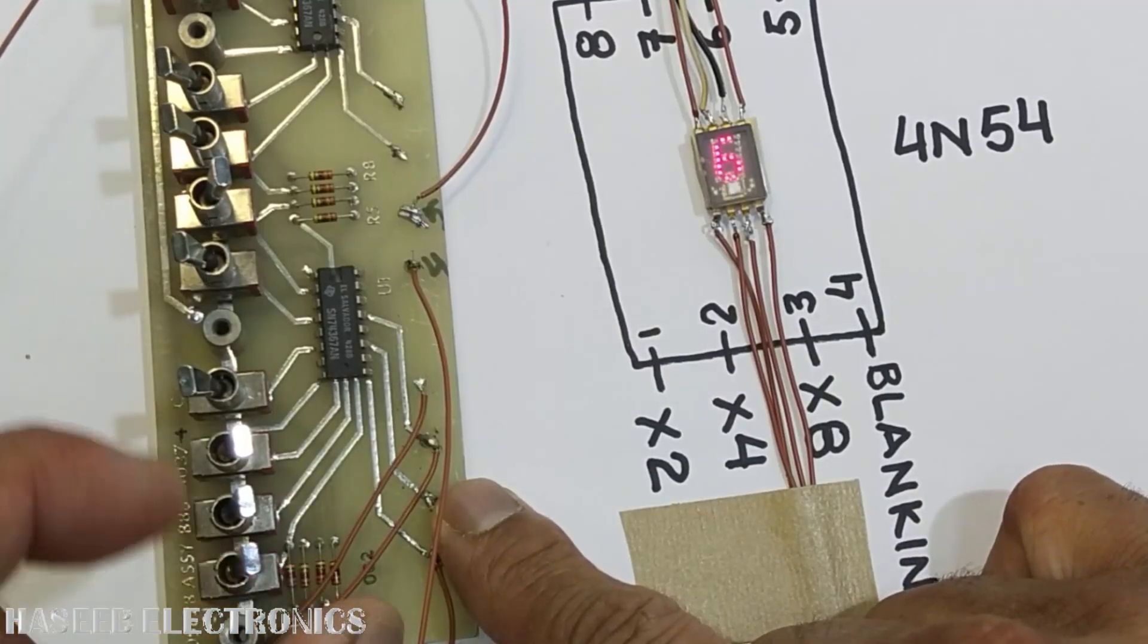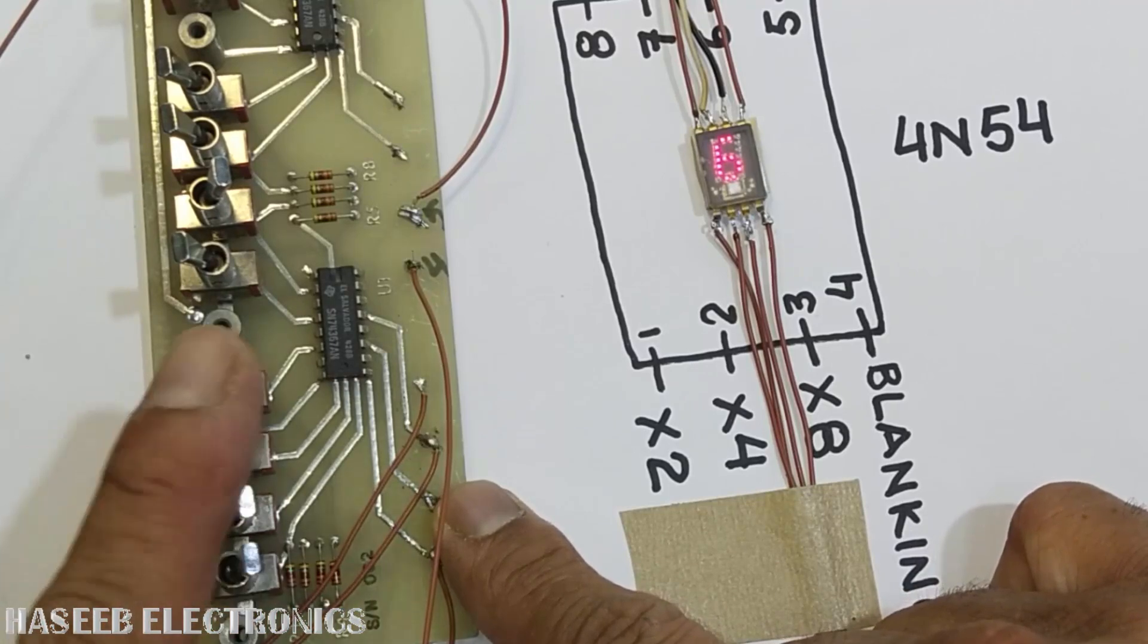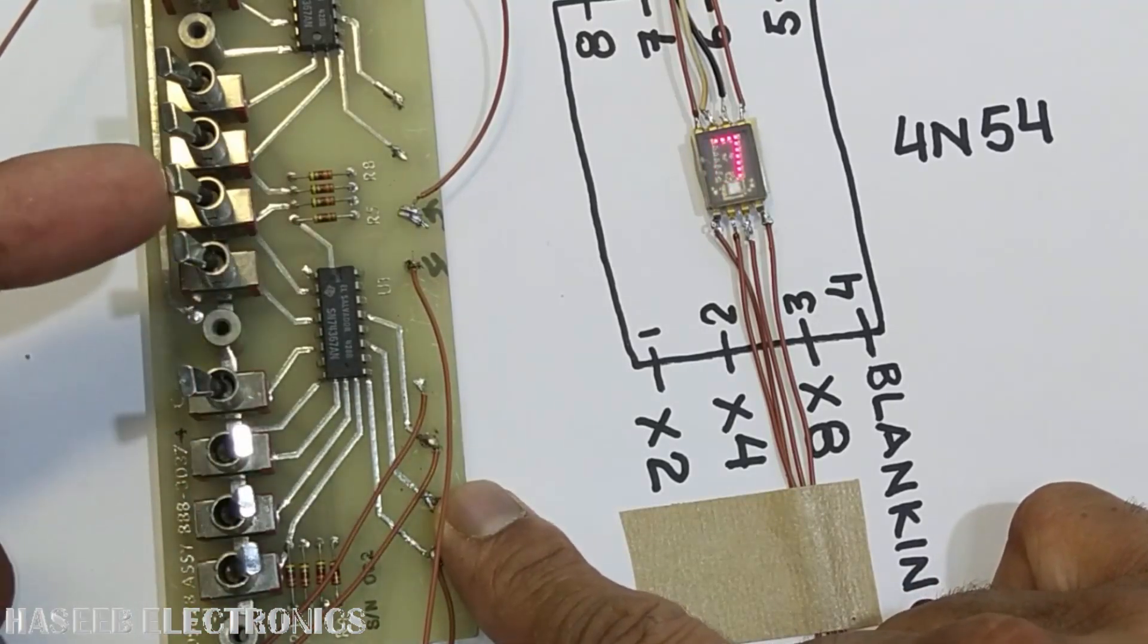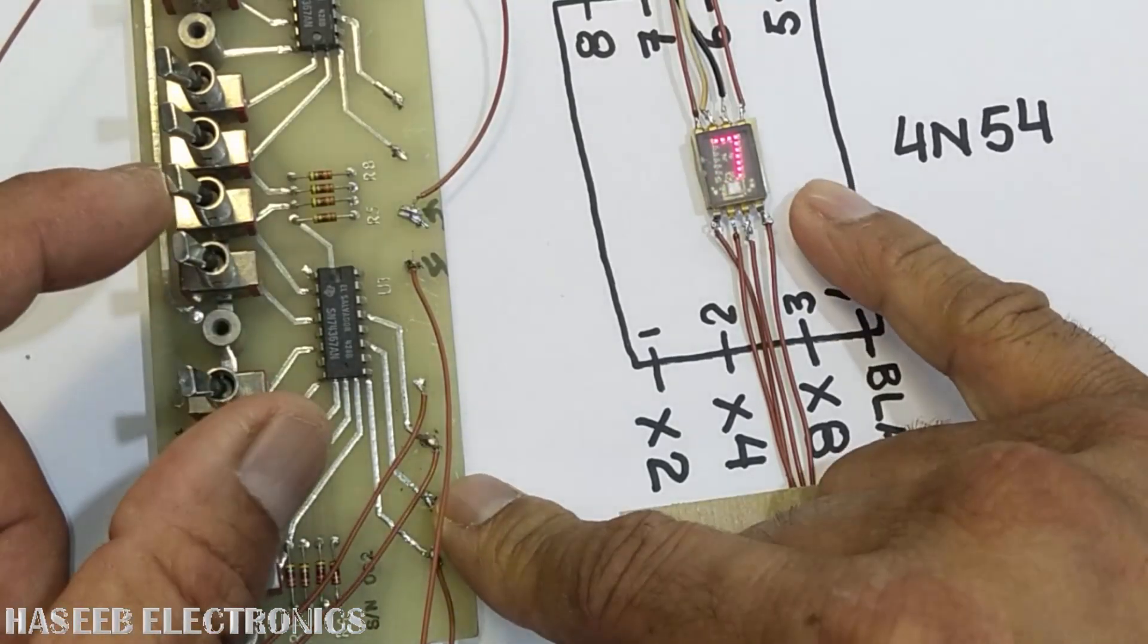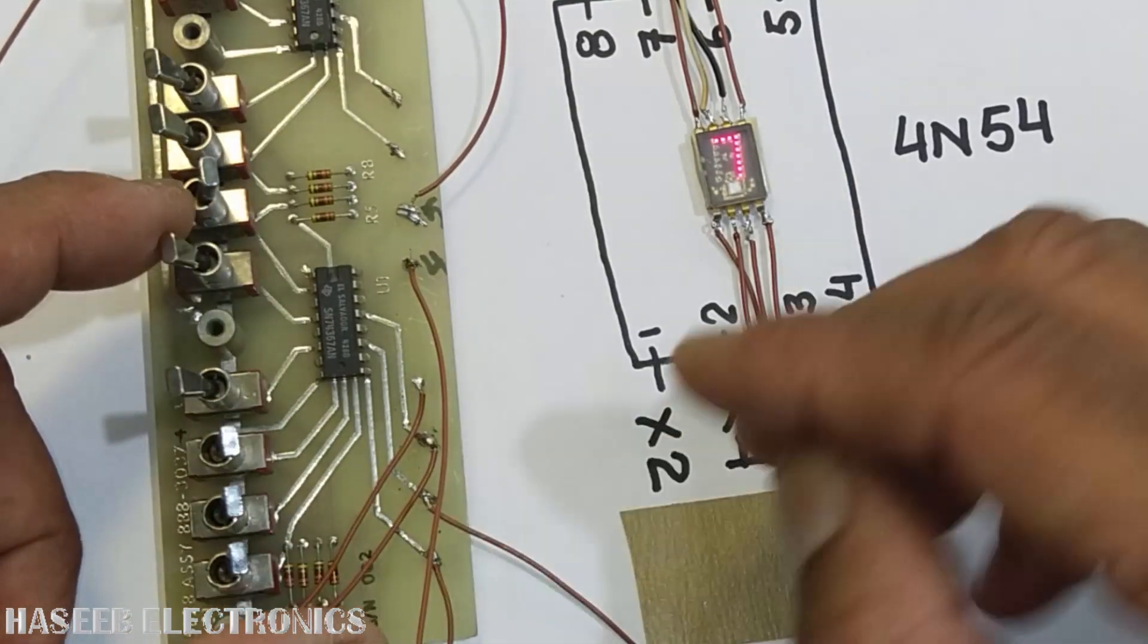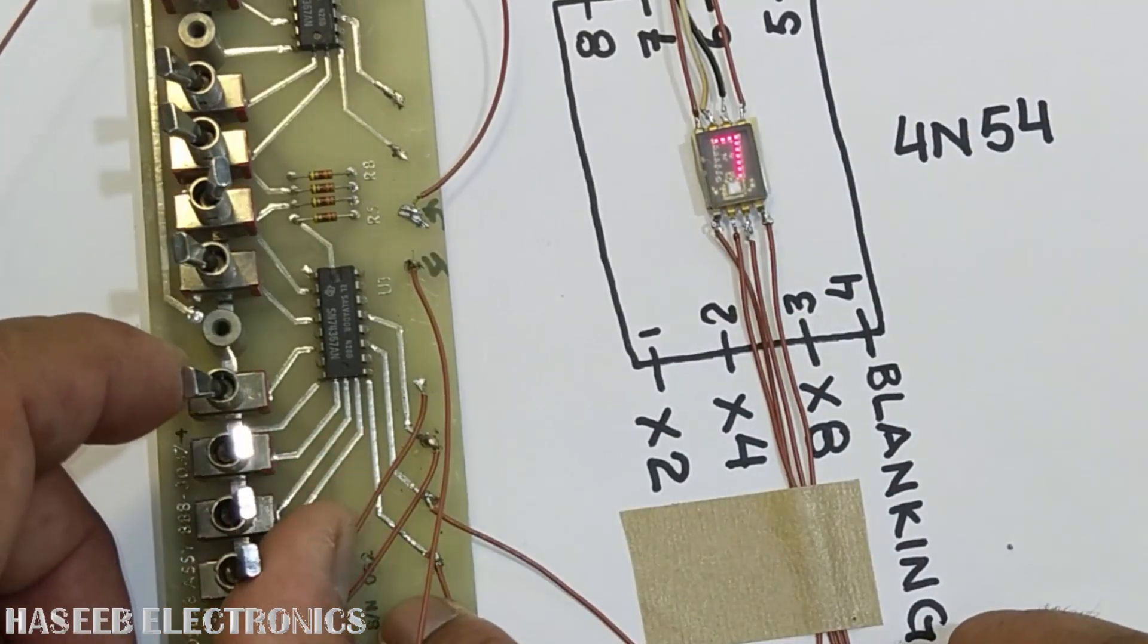Again the enable pin is high. Now 0111, 7. Just enable low, 7. Again enable pin is high. Now we will write 8.